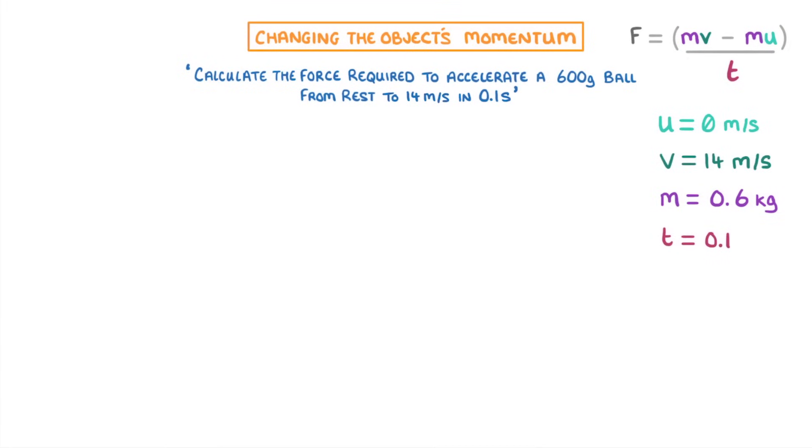Then all we have to do is plug all of these into our equation. So we get 0.6 times 14 for the mv part, minus 0.6 times 0 for the mu part, and then divide all of that by the time of 0.1. So if we simplify all of that, we get a final momentum of 8.4 minus an initial momentum of 0, all divided by 0.1, giving us a force of 84 newtons as our answer.